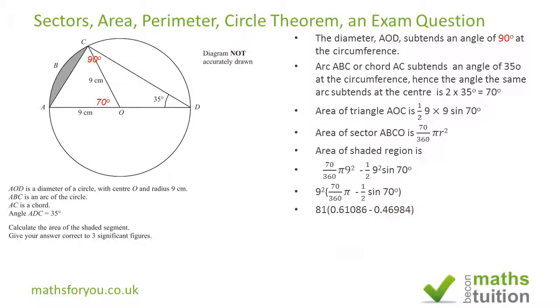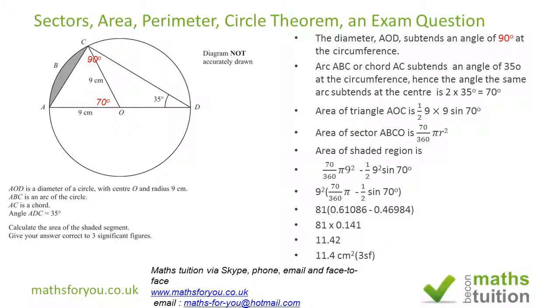Which is 81 × 0.141, and we end up with 11.42. Because we are required to give an answer correct to 3 significant figures, our answer then becomes 11.4 cm² to 3sf.